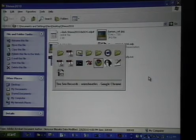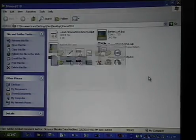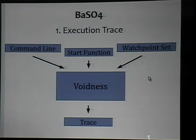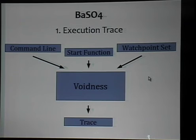The execution trace capture tool is called Voidness. You feed it a command line, the address of a start function — which module you want to start tracing and the offset into that module — and a watch point set, which is optional. This allows you to extend your trace: you can say every time I hit this line, I want to capture these variables, this memory, this register and this much memory. At the end we have a trace that we can use for post-processing.